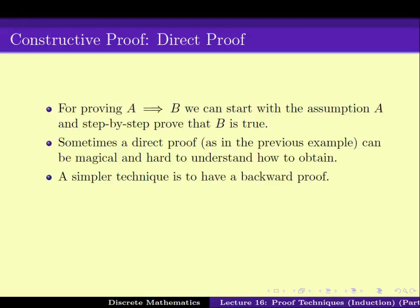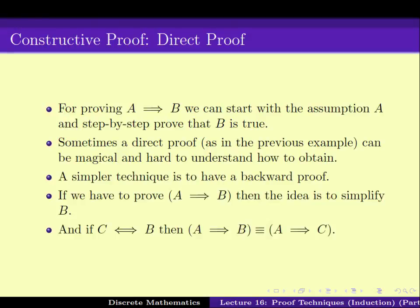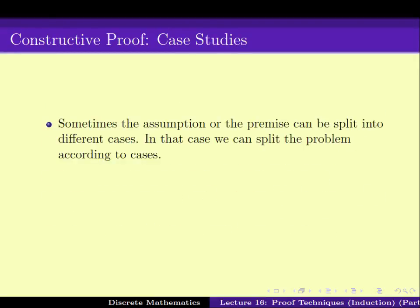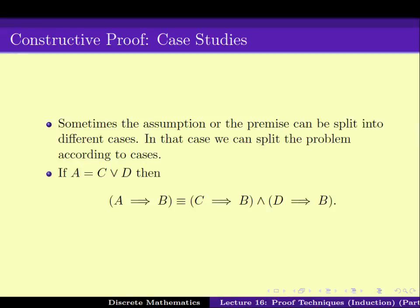Sometimes we go in a backward direction, namely we work with B and simplify to get something C, so that proving A implies C is easier than proving A implies B. We also saw the case study where we can split the assumptions into an OR of a finite number of them, and that in turn helps us to split the problem into an OR of a finite number of subproblems — namely if A equals C OR D, then A implies B is the same as C implies B and D implies B.